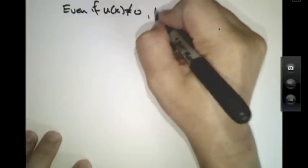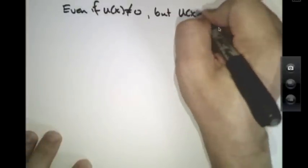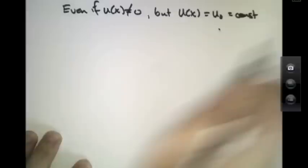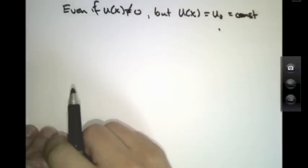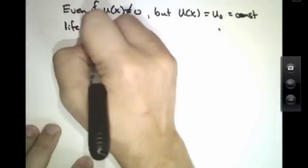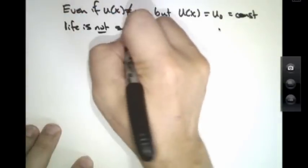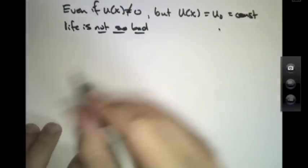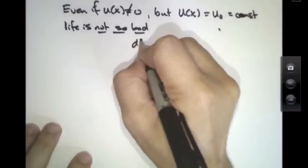In the cases when the potential energy is not zero, but can still be approximated to be a constant, life is not so bad. In this case, the Schrödinger equation looks like this.